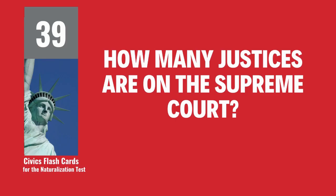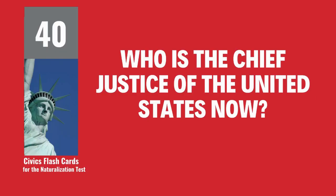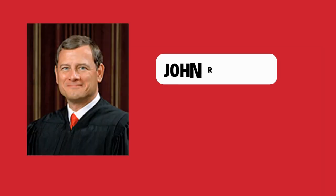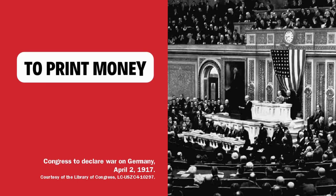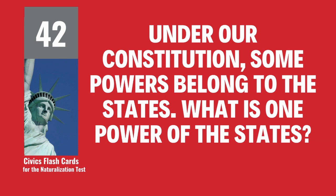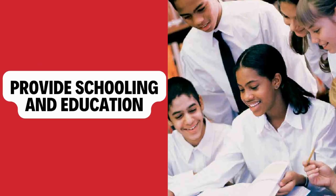How many justices are on the Supreme Court? Nine. Who is the chief justice of the United States now? John Roberts. Under our Constitution, some powers belong to the federal government. What is one power of the federal government? To print money. Under our Constitution, some powers belong to the states. What is one power of the states? Provide schooling and education.